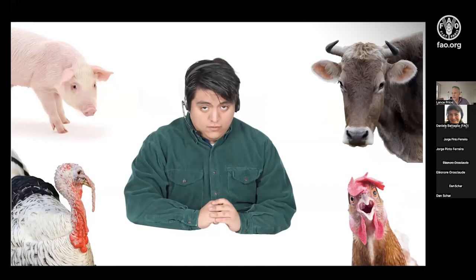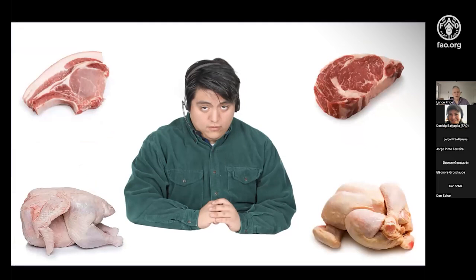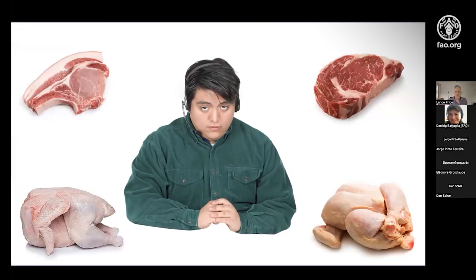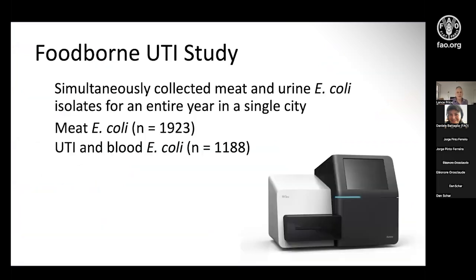We know that people can pass strains from person to person, and this is almost certainly the dominant pathway — the world is covered in a thin layer of fecal matter and we're sharing E. coli strains all the time. The people we live with are the people we're most at risk of picking them up from. But we've also been asking: can people pick these up from food animals? This question originated with studies from the 1960s in the UK, where they had outbreaks of urinary tract infections in hospitals traced back to suspected poultry products in the kitchen.